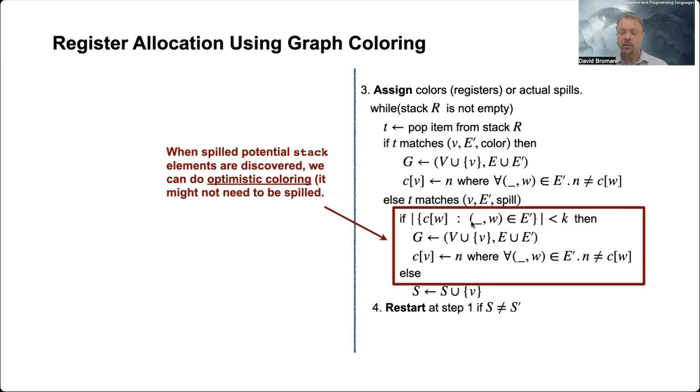If these are together less than k, then we can actually do graph coloring. So sometimes you can do graph coloring even if it's spilled. In such a case, we just do the same thing - we reconstruct the graph and then pick another color.